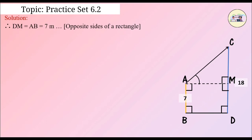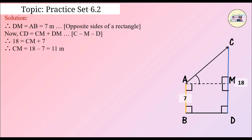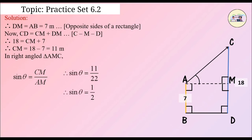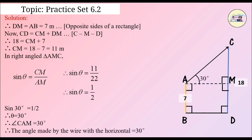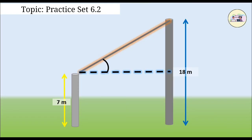Since opposite sides of a rectangle, CD is equal to CM plus MD, and M lies between C and D. Therefore, 18 is equal to CM plus 7. Therefore, CM is equal to 18 minus 7, which is equal to 11 meters. In right angle triangle AMC, sin theta is equal to CM upon AC. Therefore, sin theta is equal to 11 upon 22. Therefore, sin theta is equal to 1 upon 2. Since sin 30 degrees is equal to 1 upon 2, therefore theta is equal to 30 degrees. Therefore, angle CAM is equal to 30 degrees, and the angle made by the wire with the horizontal is 30 degrees.